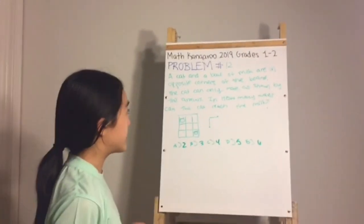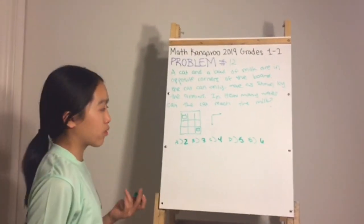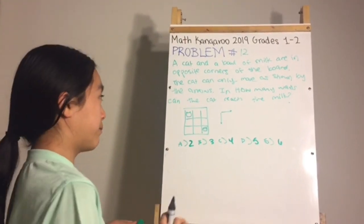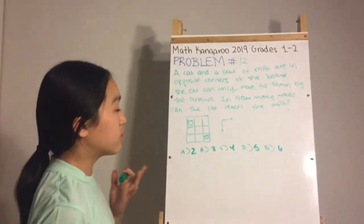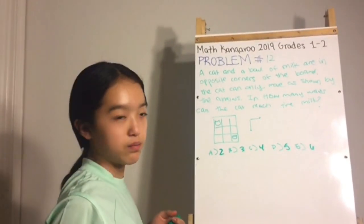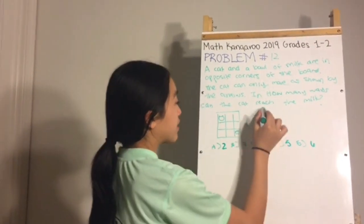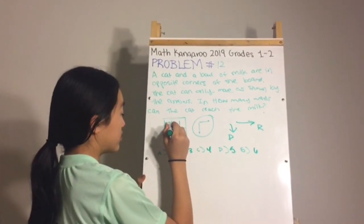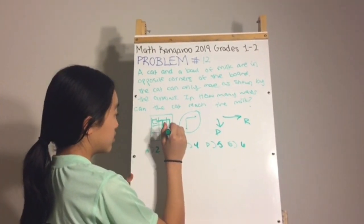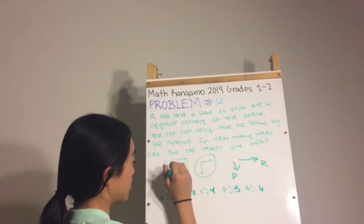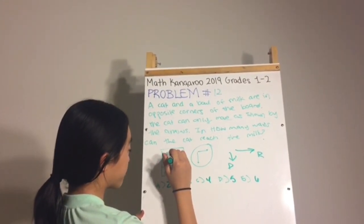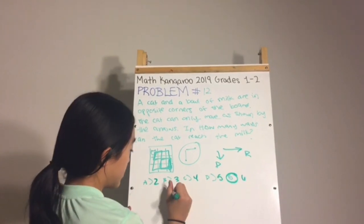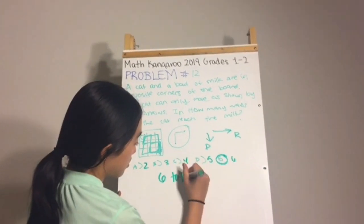Problem number twelve: a cat and a bowl of milk are in opposite corners of a board. The cat can only move right or down. Mark out all different paths — there are six possible ways for the cat to reach the milk, giving the answer E.